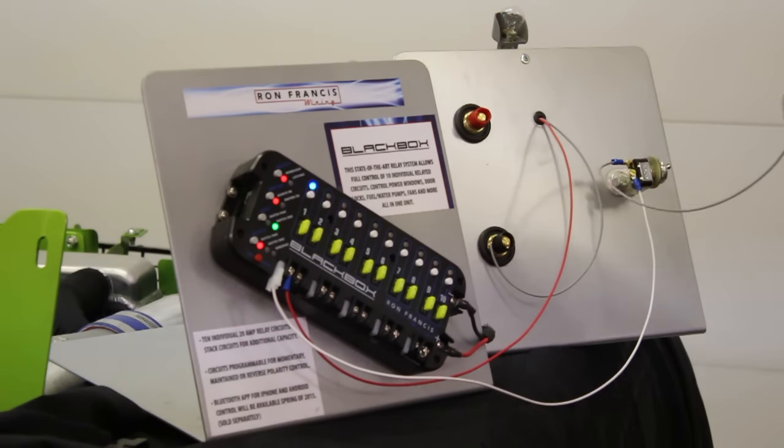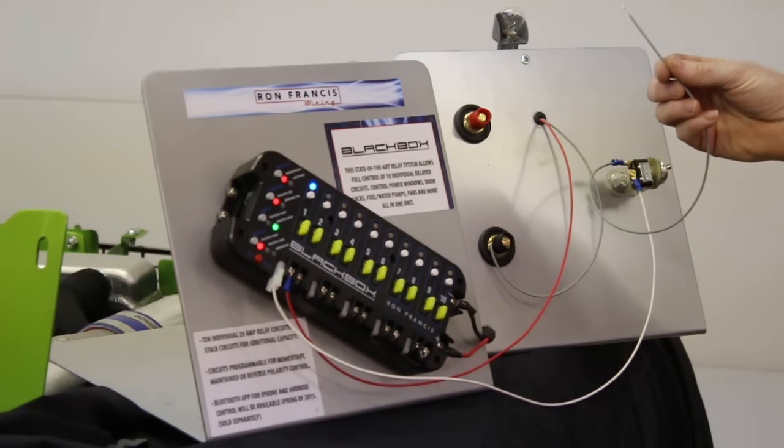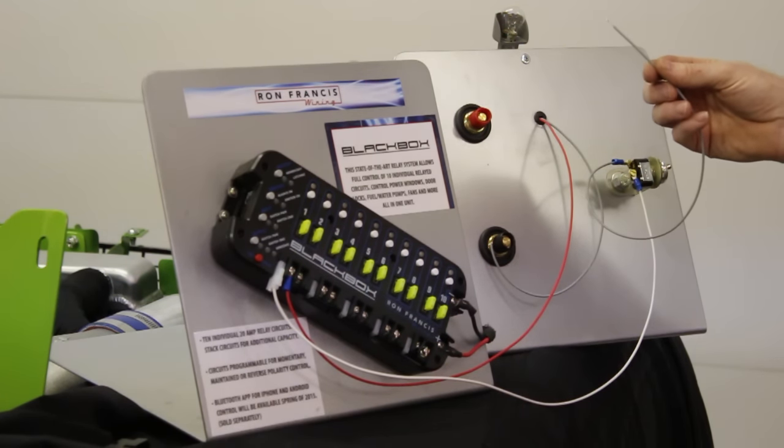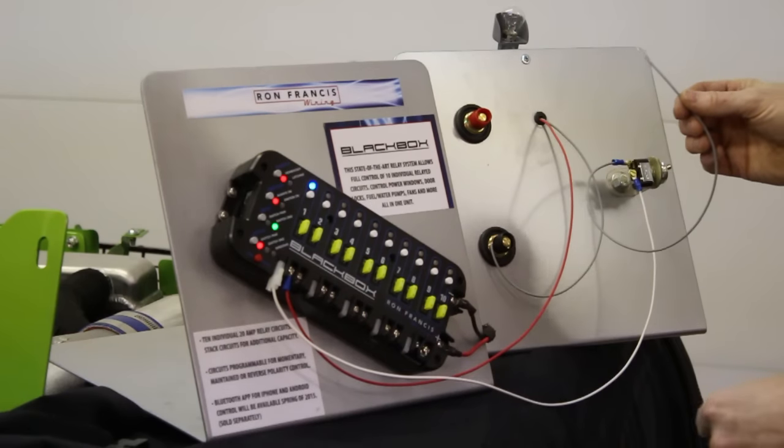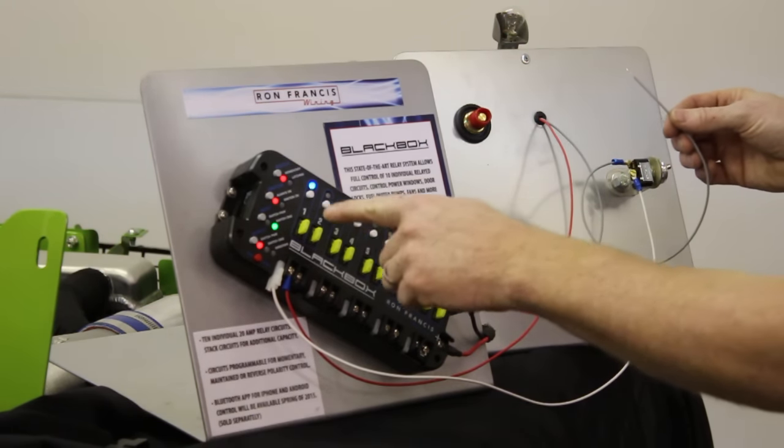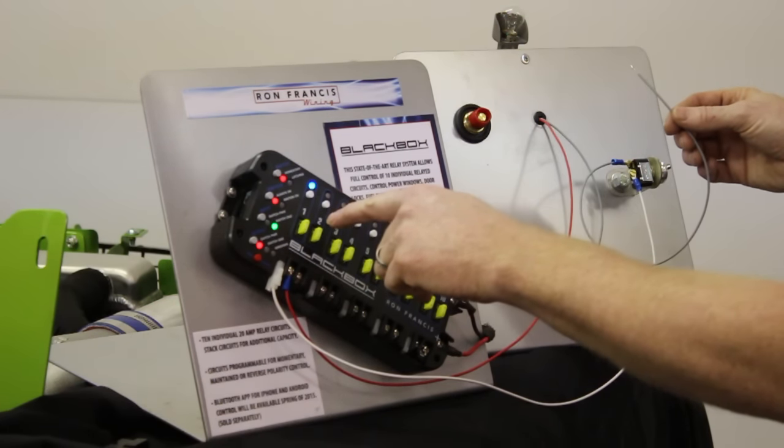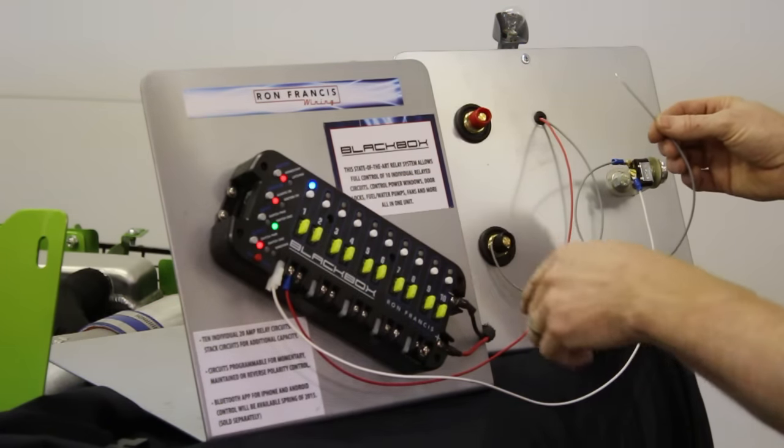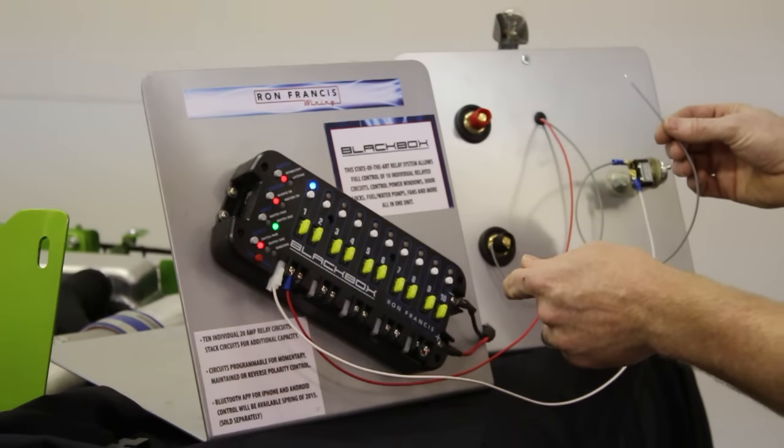And then we have the trigger for circuit number one going to a momentary toggle switch here. And I have the other side open so I can show you how quickly and easily you can change each one of these Black Box circuits to behave how you'd like. So again, get circuit number one lit up. And by the choices on the programming buttons, we have it on momentary, have it on always on, meaning that it's battery power instead of ignition power to activate circuit number one.